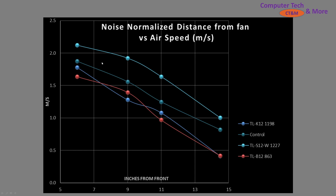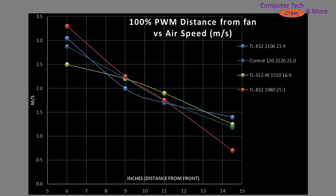At the top is the TLS12W, which outperformed my control fan. At 100% PWM fan signaling, they're all shaping up nicely. The B12 is the red line, and the S12 is the green line, matching my control fan fairly closely.